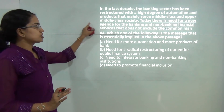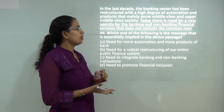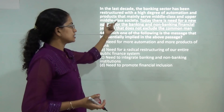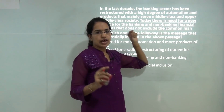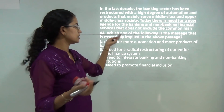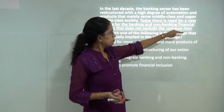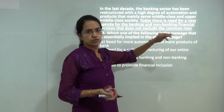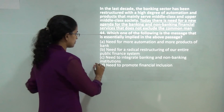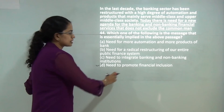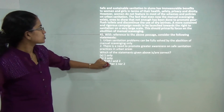This question talks about automation already achieved in the banking system. However, there is a need today to include the common man, which is where the Jan Dhan Yojana comes in. So the concept of financial inclusion is talked about in this passage — there is a need to promote financial inclusion.